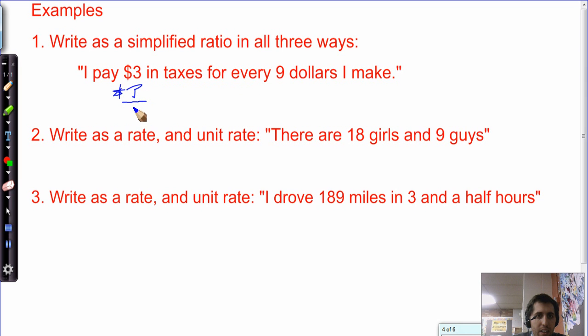So we'll have a simplified ratio. It would be $3 to $9. We know that that simplified would be divide top and bottom by 3. We'd have 1 third. But not 1 third. We'd say 1, 2, 3. So for every $1 I make, or I pay $1 in taxes for every $3 I make. The other two ways to write that are 1 to 3. Pay $1 in taxes for every $3 I make. Or just the words. 1, 2, 3. That's the ratio. It's 1 to 3.